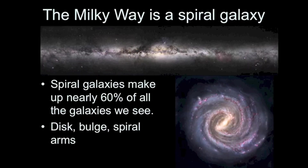The Milky Way is a spiral galaxy. The image at the top of the screen shows our view from inside of the galaxy. The sun is in the disk of the galaxy, so when we look through it we see gas and dust — that's the dark material we see within the disk — and also the light from stars within the disk. The image on the bottom right is what our galaxy would look like seen top down.